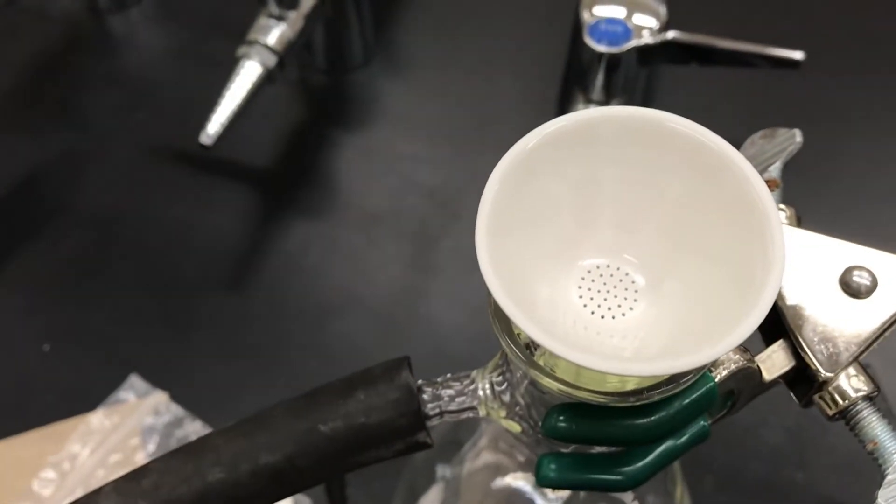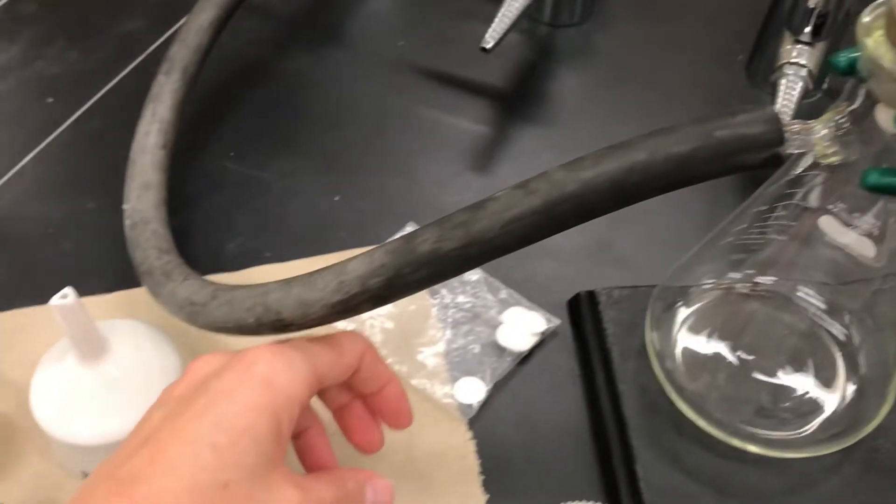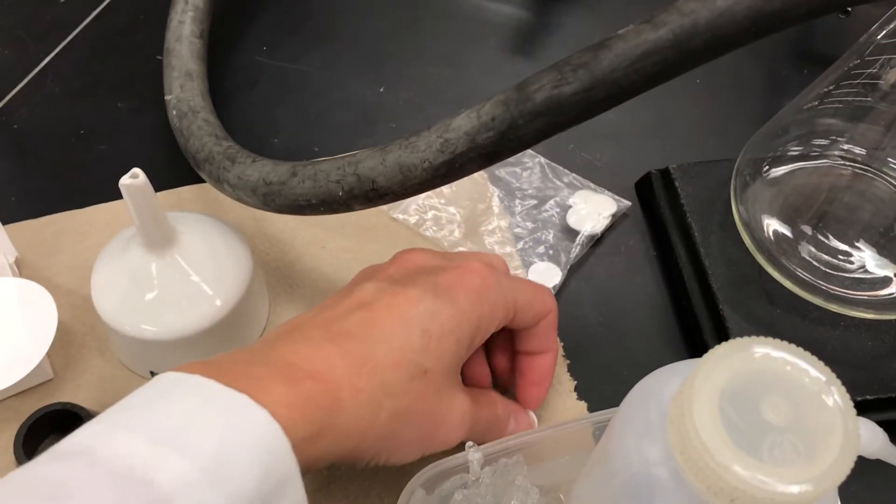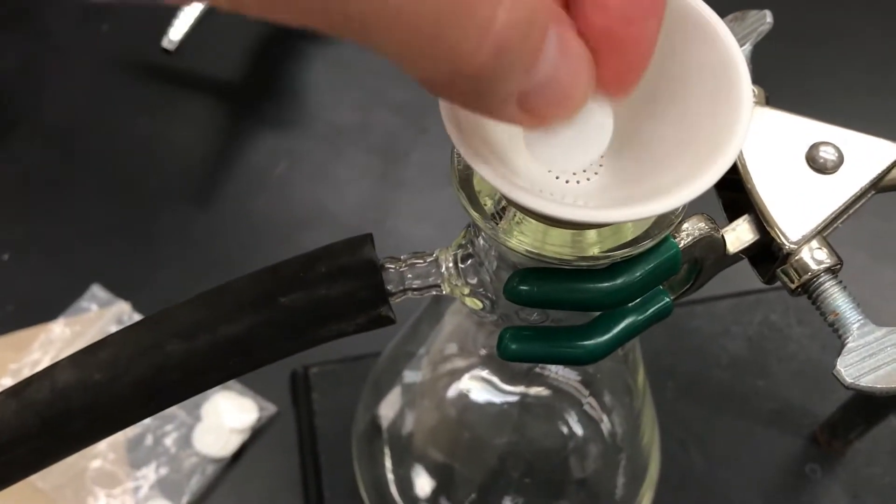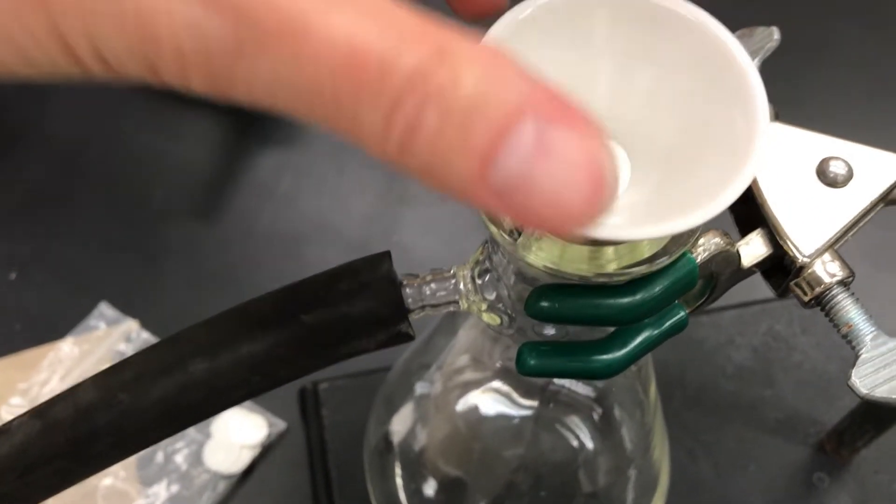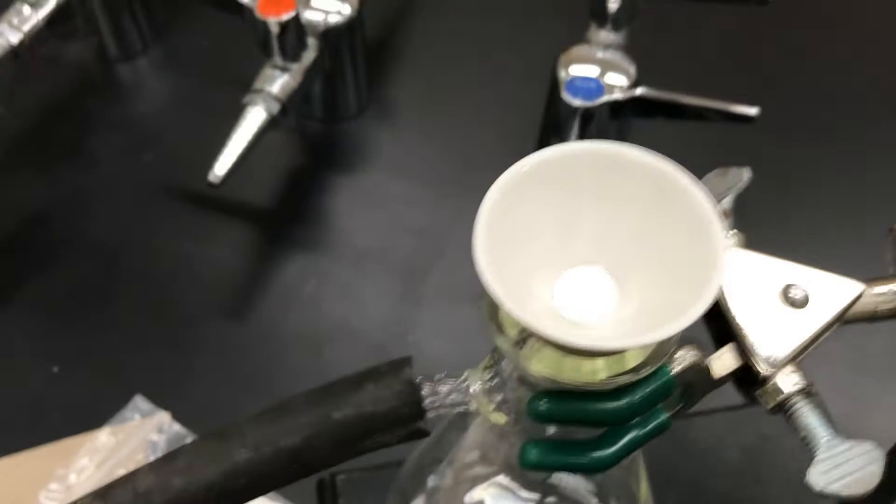The funnel does have holes in it, and so if we poured liquid that would just stream in. So we need to first put a filter paper to block the holes. Add this tiny little filter paper over top of the holes and now it's ready.